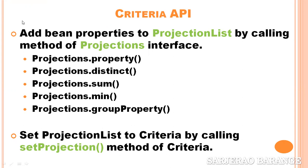First, add bean properties to the projection list by calling methods of the Projections interface. Whatever you want to include in the select clause — whether it is a property, a group function, or a group method — that will be added to the projection list.